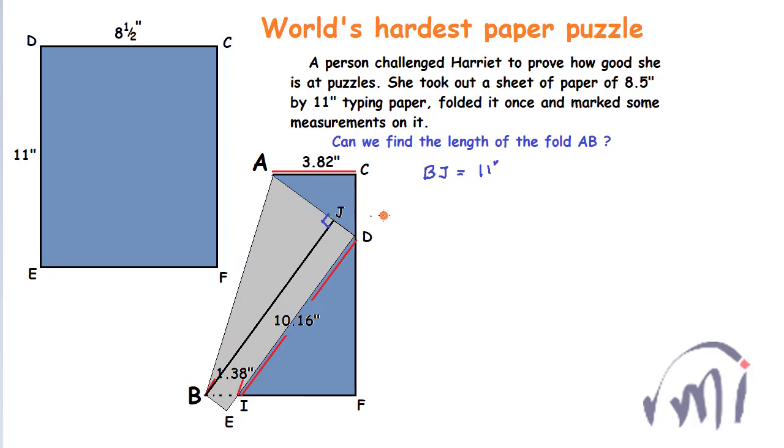So what is the length AJ? AJ is nothing but AD minus JD where JD is equal to BE this length. Why? Because EBJD is a rectangle so BE will be equal to JD but now the question is what is the length BE?